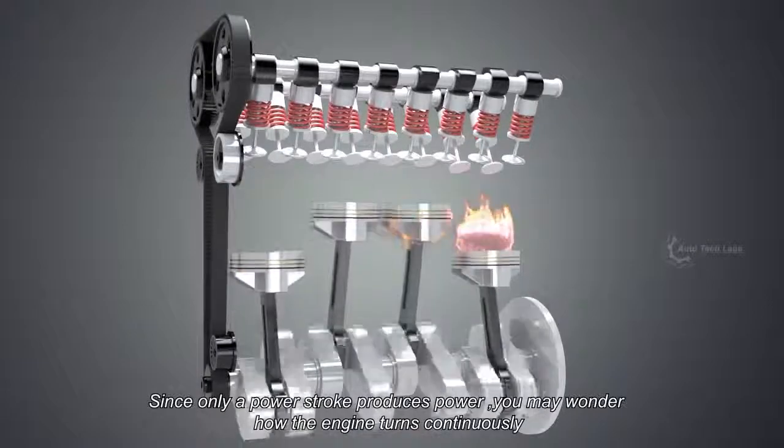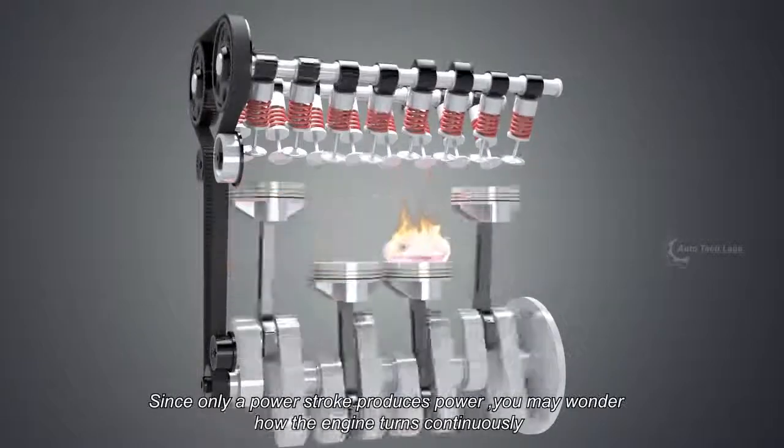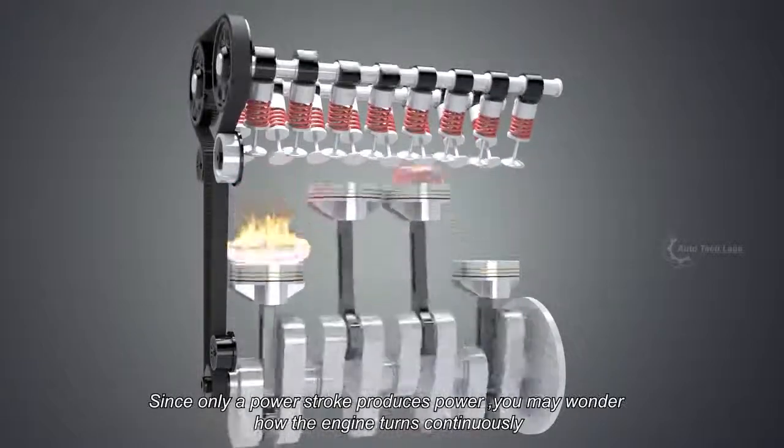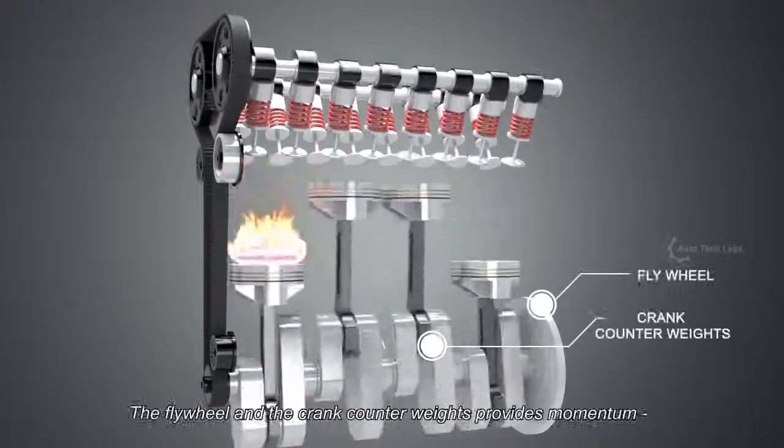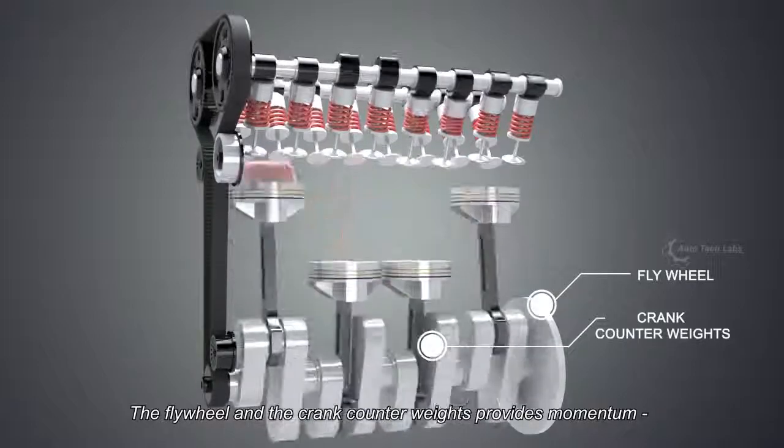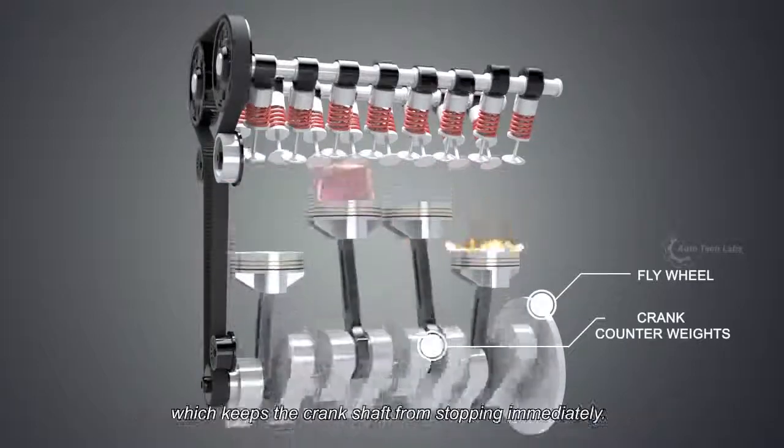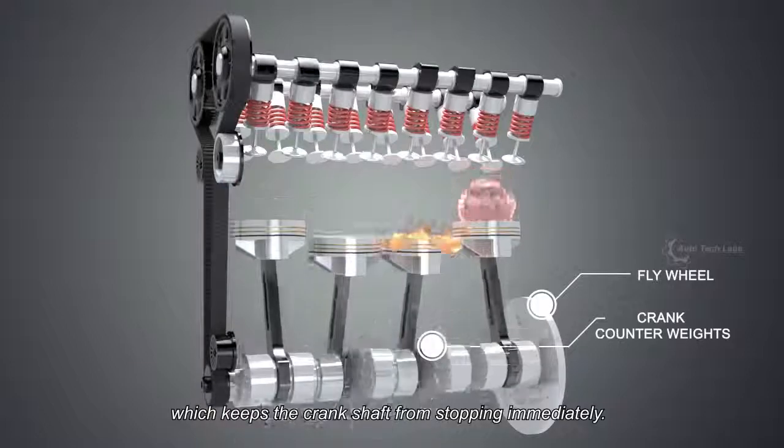Since only a power stroke produces power, you may wonder how the engine turns continuously. Well, the answer is in the crank itself. The flywheel and the crank counterweights provide momentum, which keeps the crankshaft from stopping immediately.